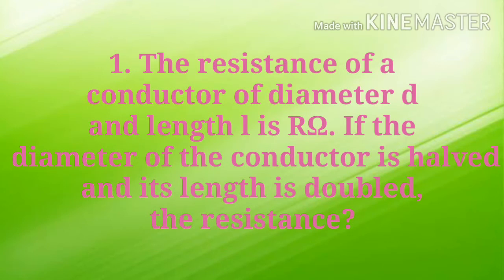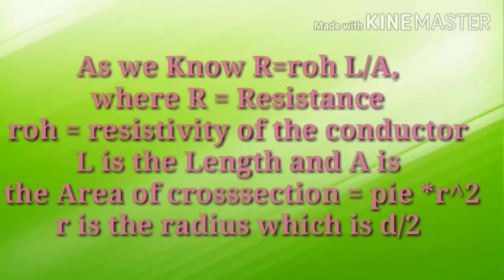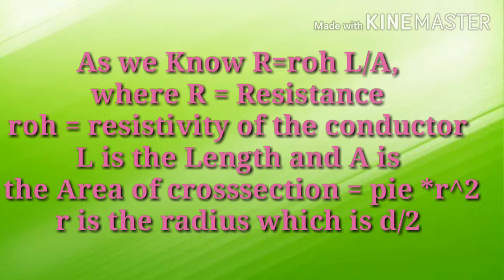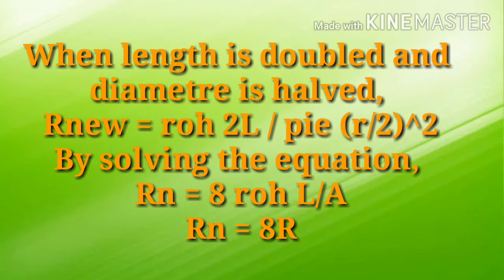The resistance of a conductor of diameter D and length L is R ohm. If the diameter of the conductor is halved and its length is doubled, the resistance is what? As we know, R = ρL/A, where R is the resistance, ρ is the resistivity of the conductor, L is the length, and A is the area of cross-section, equal to πr² where r is the radius = D/2. When length is doubled and diameter is halved, the new resistance R_new = ρ·(2L) / (π·(r/2)²). Solving this equation, R_new = 8·(ρL/A) = 8R. So the new resistance is 8 times the old resistance.